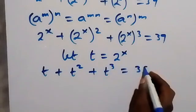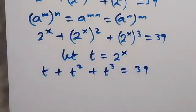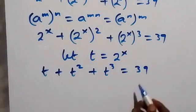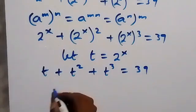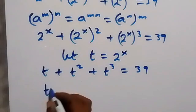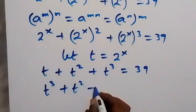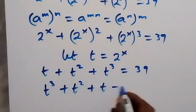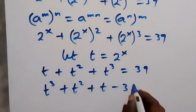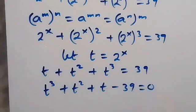In the next step we rearrange and bring 39 to this side. Writing t cubed first, we have t cubed plus t squared plus t minus 39 equals zero. We now have a cubic equation.